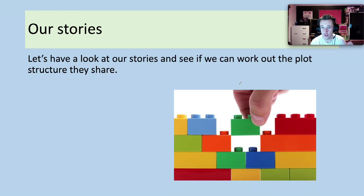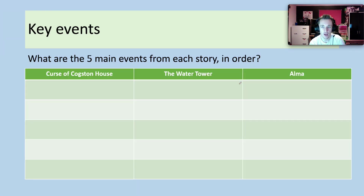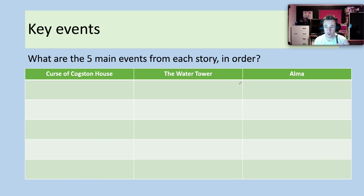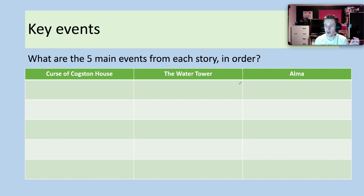So we're going to have a look at the stories we've read so far and see if we can work out the structure that they have. What I've got here is a grid, and what I'd like you to do is just make some notes quickly. Pause the video — can you note down, in the order that they happened, the five main events of each of these three stories? We've read two of them and I know you did Alma last year. So pause the video now, bullet point, and make some rough notes of what happens in these three stories in order.